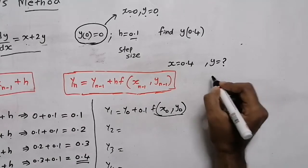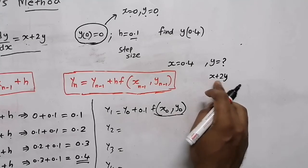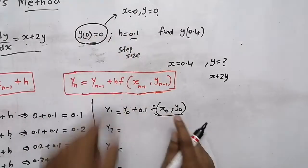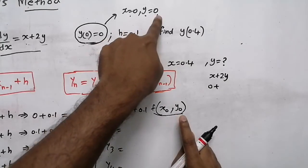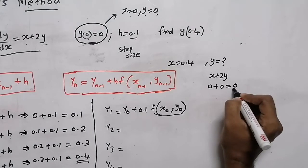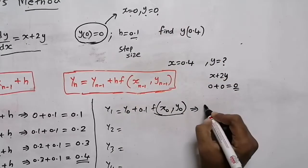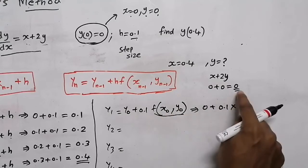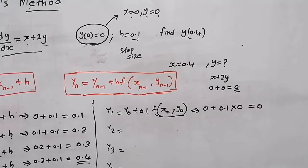To find y1, we substitute x0 and y0 into f(x, y) = x + 2y. x0 is 0 and y0 is 0, so f(x0, y0) equals 0 plus 2 times 0, which equals 0. Therefore, y1 equals 0 plus 0.1 times 0, which gives y1 equal to 0.